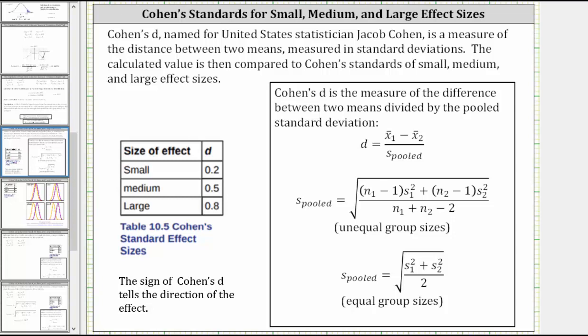For example, if the d value is positive, the distribution being considered has a larger mean. If the d value is negative, the distribution being considered has a smaller mean. Now let's take a look at the formulas.